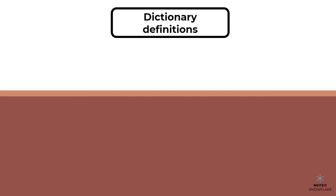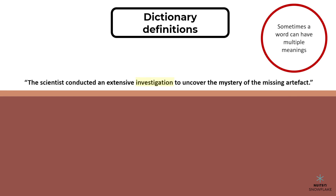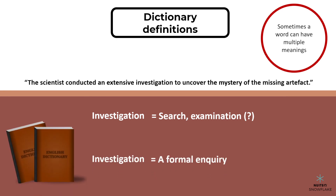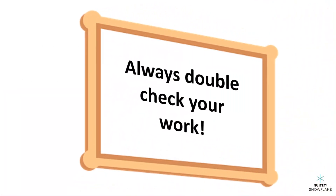Finally, you can also verify the meaning of a word or phrase by checking multiple dictionary definitions, since a word can have multiple meanings depending on the context. For example: 'The scientist conducted an extensive investigation to uncover the mystery of the missing artifact.' You might guess that investigation means search or examination, but checking multiple dictionary definitions shows it can also mean a formal inquiry or a systematic search for facts. Remember, it's always important to double-check your work — and who knows, you might just learn some new words along the way.